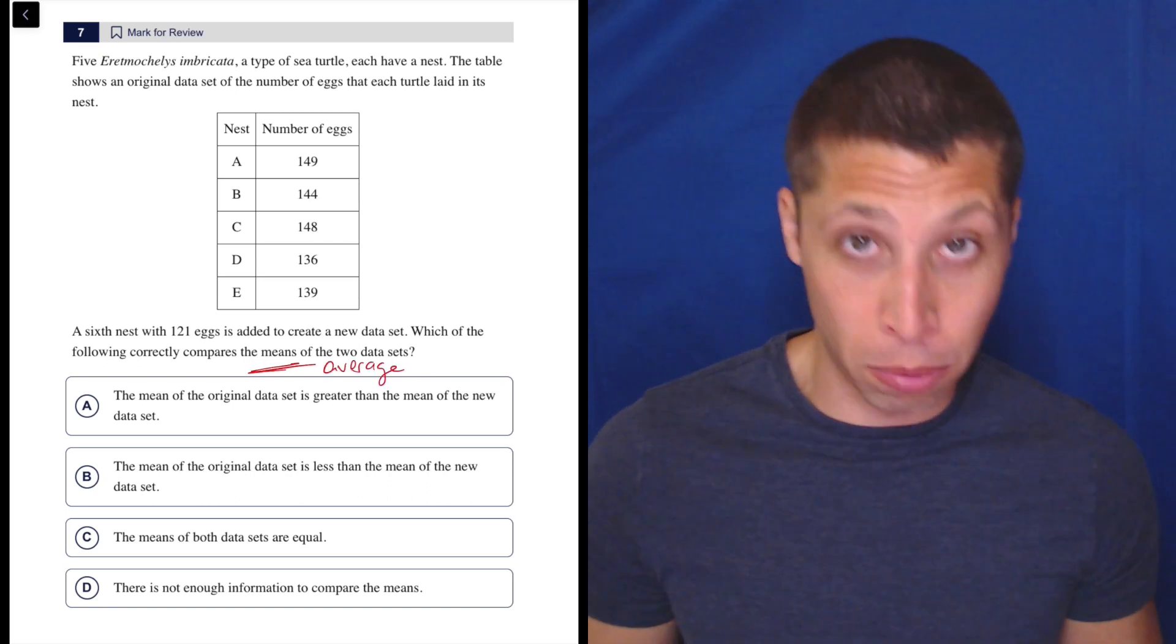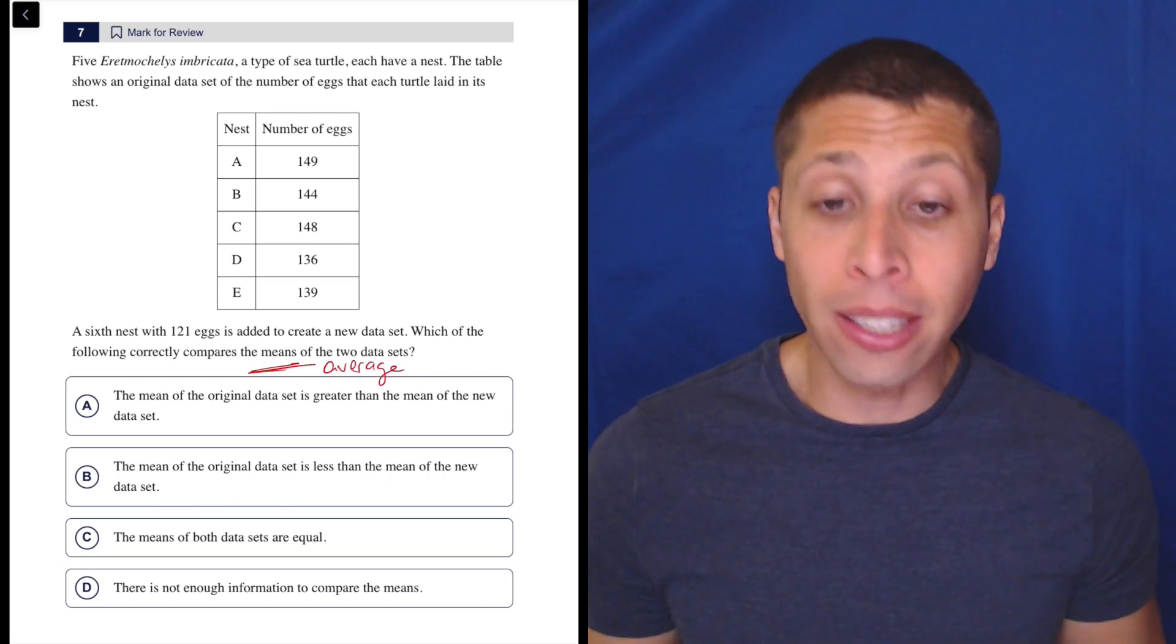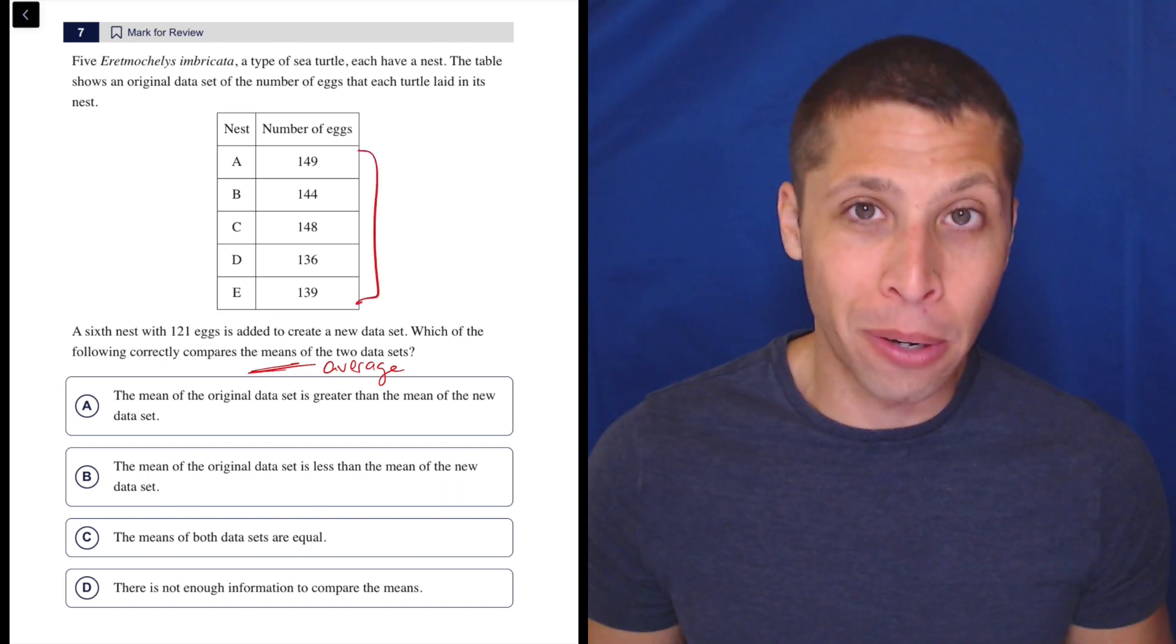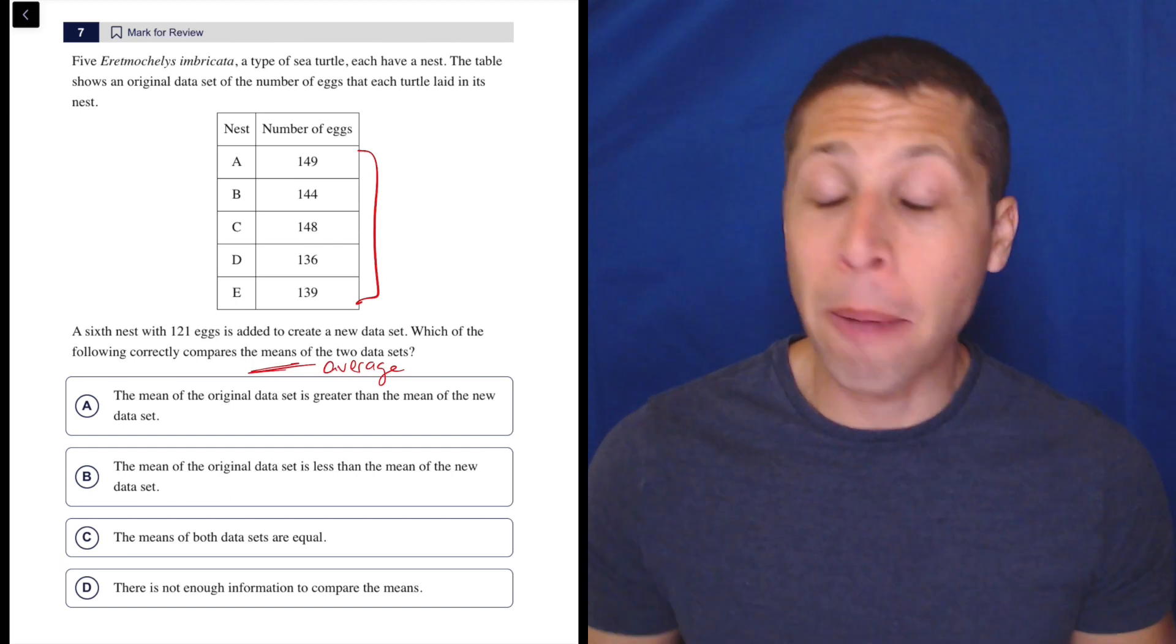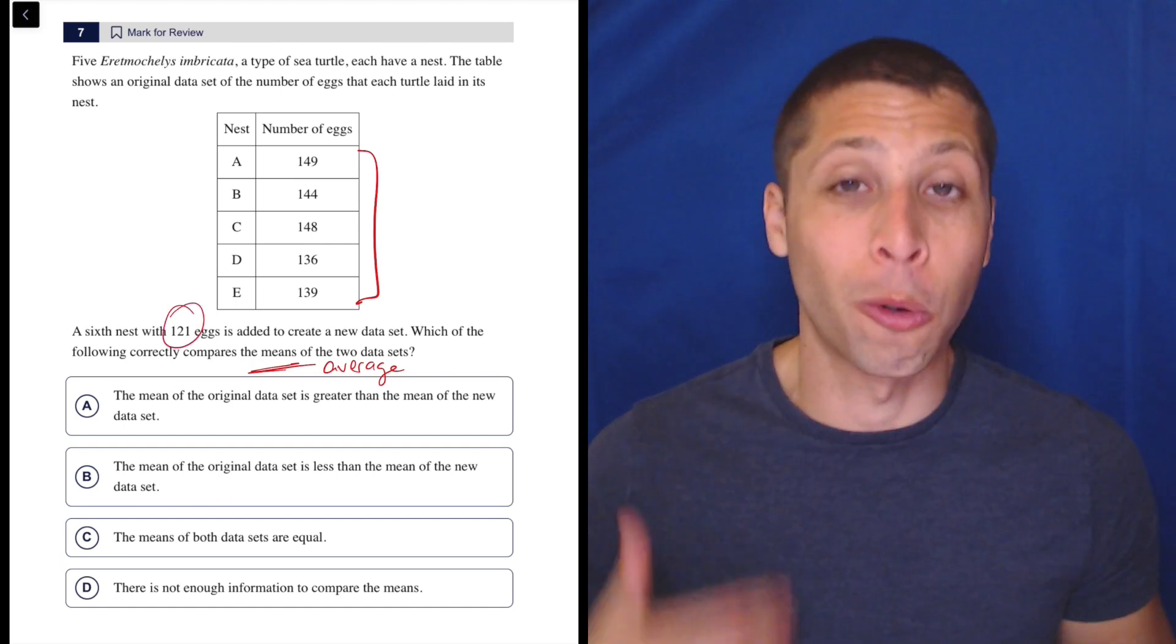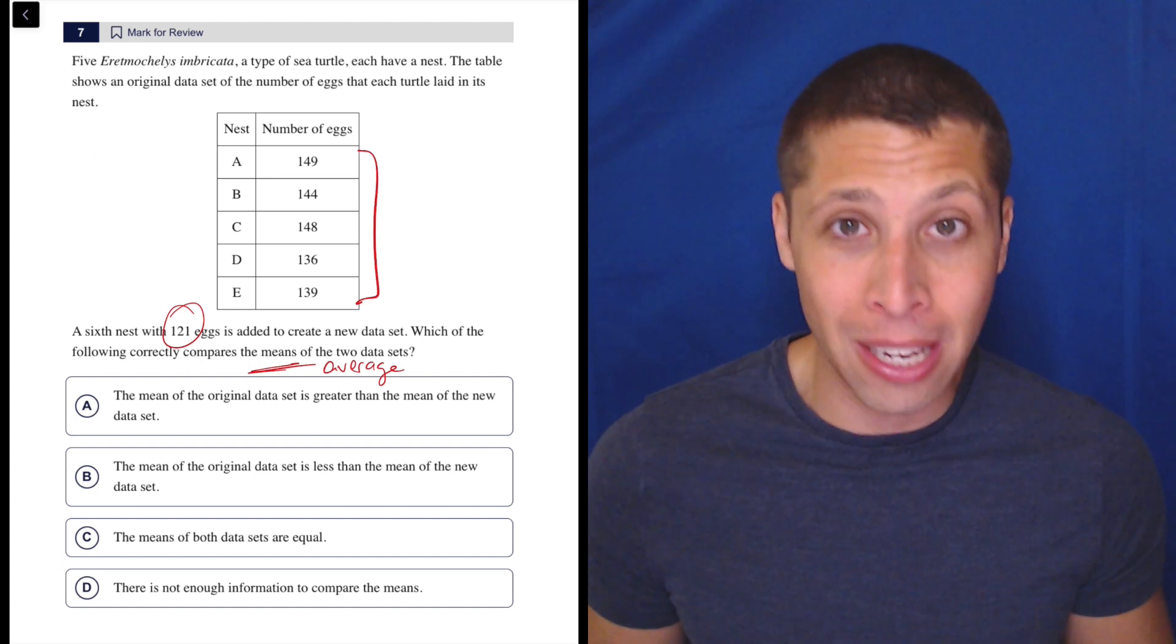And you should know the formula for the average. You could calculate the average of the eggs originally by adding up all of these numbers and then dividing by five. You're going to get a mean. Then you do the same thing, but you add in the sixth number, the 121, and divide by six. And you can literally just compare those means.